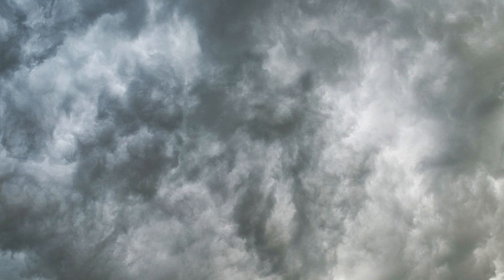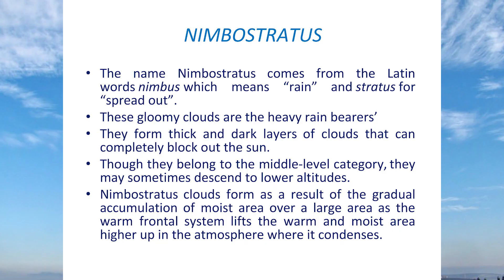Nimbostratus clouds are the most important. Nimbus itself means rain, and stratus means spreading — so a lot of rain spreading out is a nimbostratus cloud. These gloomy clouds: once you see the sky is gloomy, you know rain is coming. They form thick, dark layers that block out the sun completely. They give heavy rain and sometimes descend to lower levels as well.